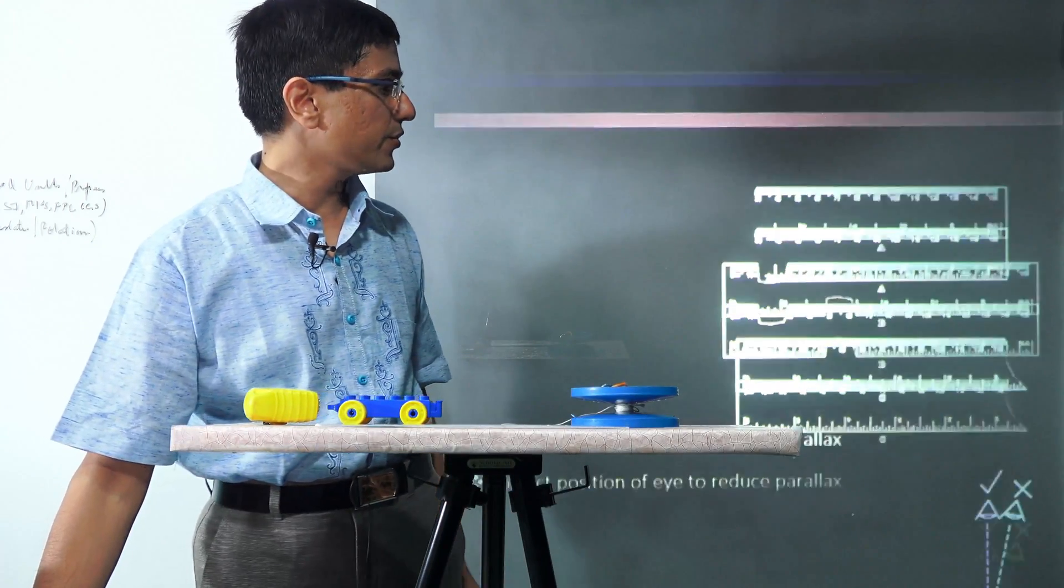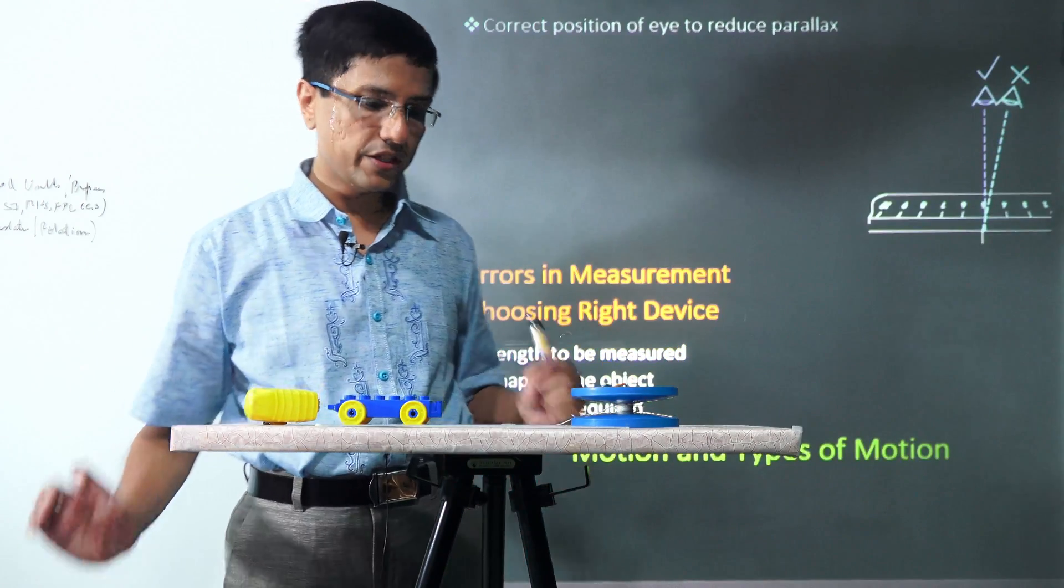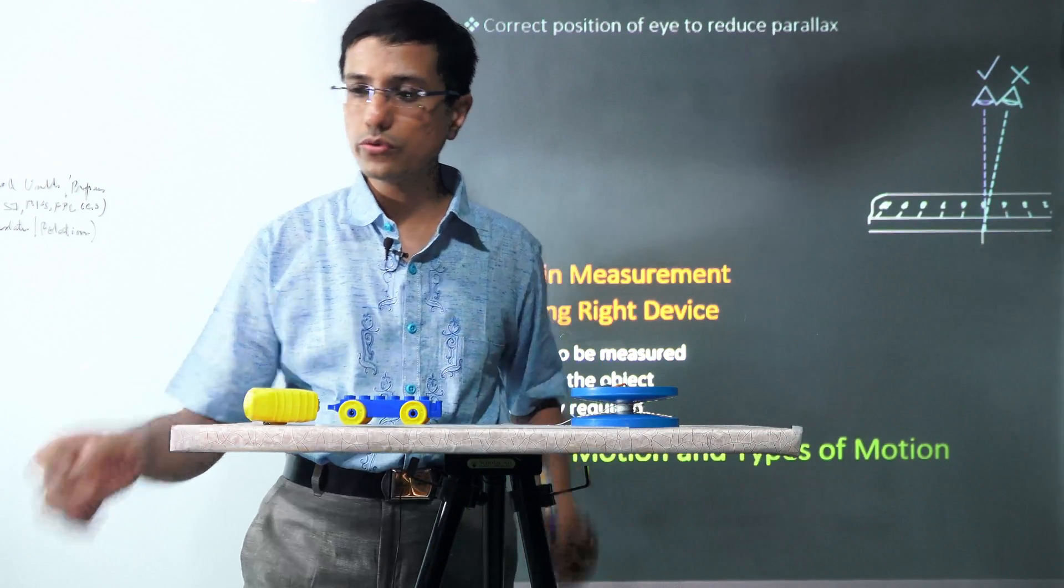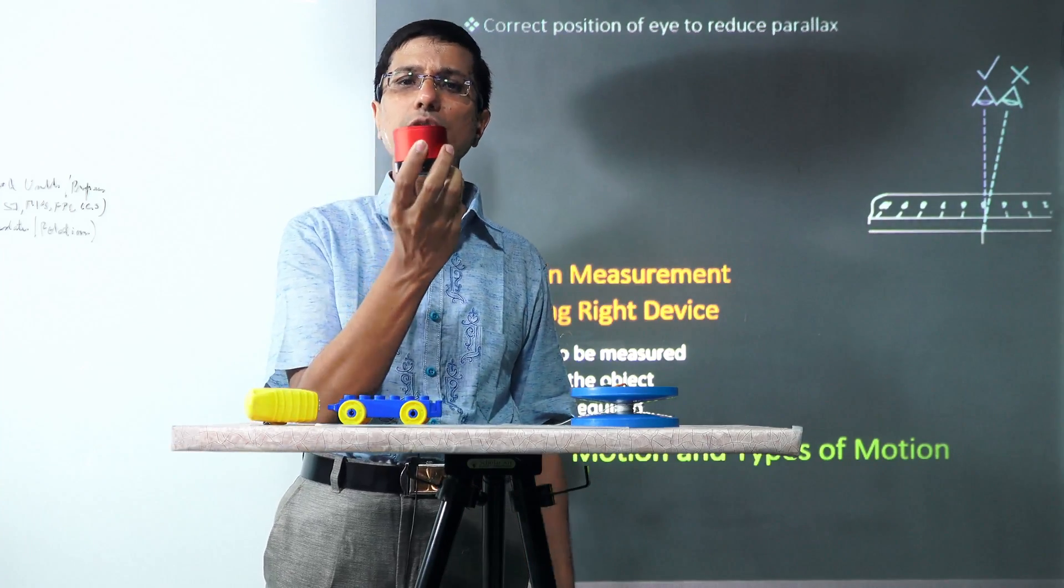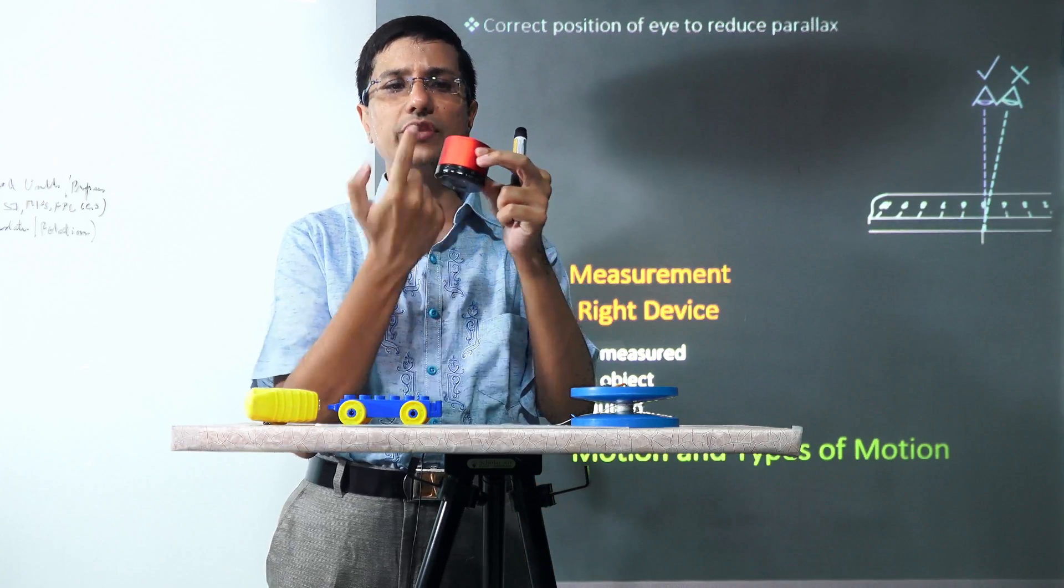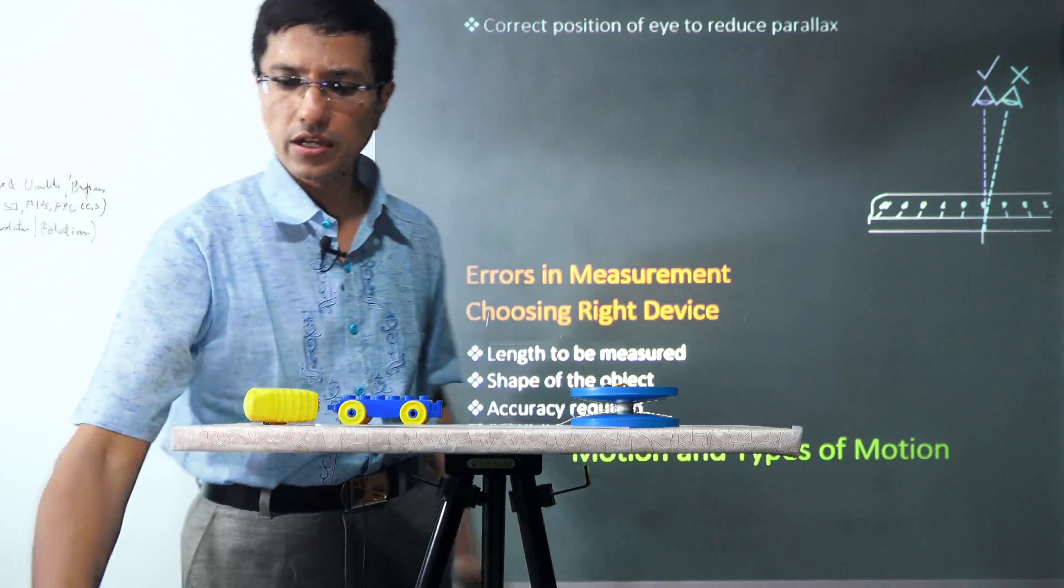The third thing is we should be cognizant about the object whose size or length we are about to measure. For example, if I were to measure the circumference of this cylinder, I cannot use a ruler.